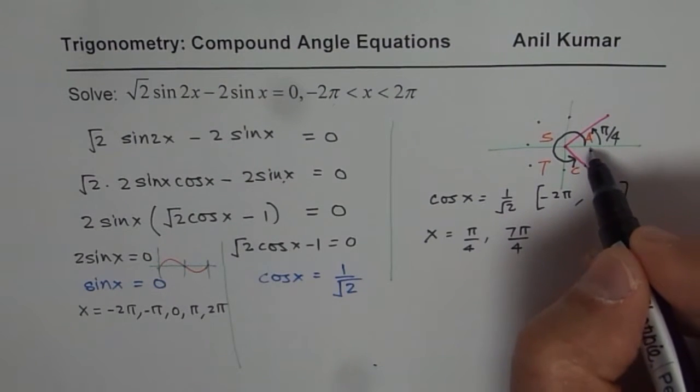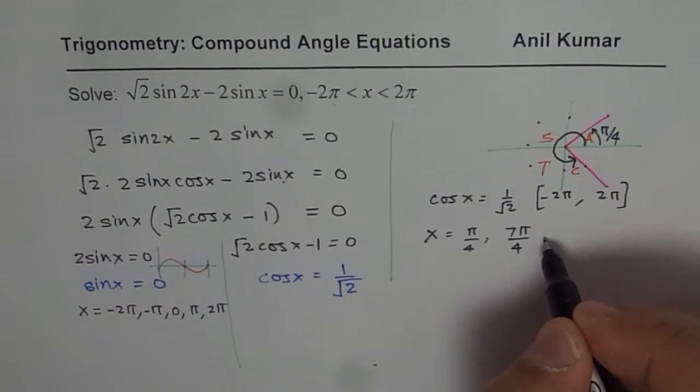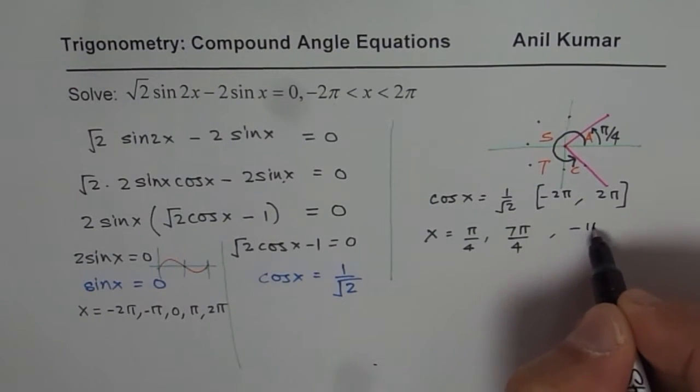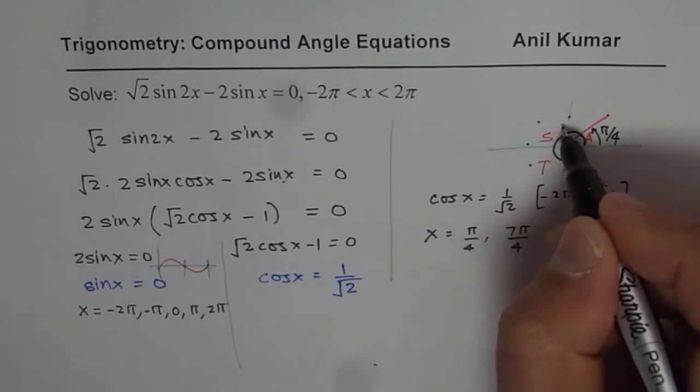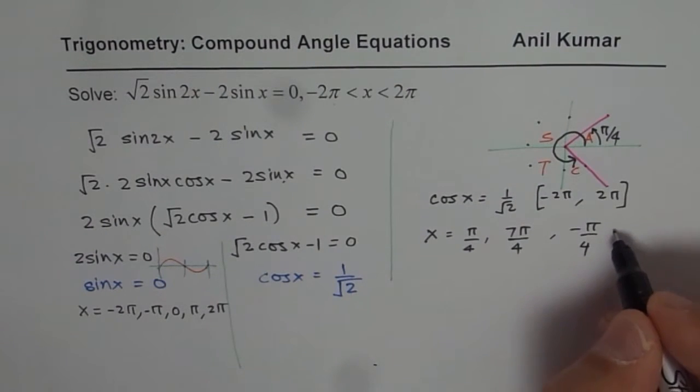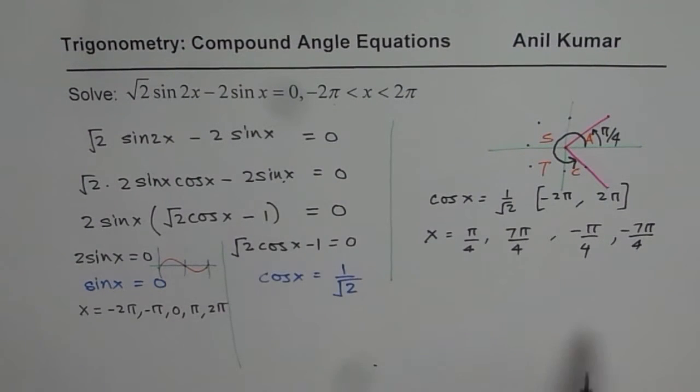you get -π/4. So we get -π/4 and then -7π/4, right? So -7π/4. So within this given domain, we have those four solutions.